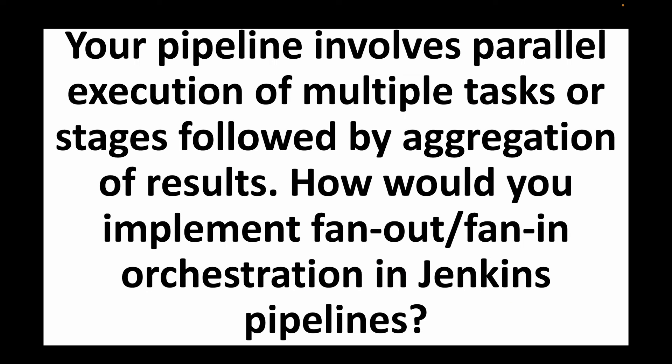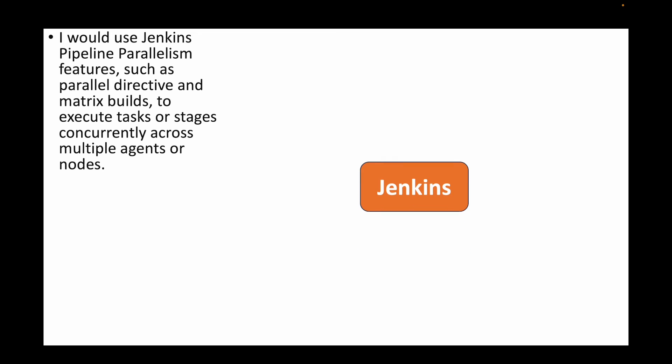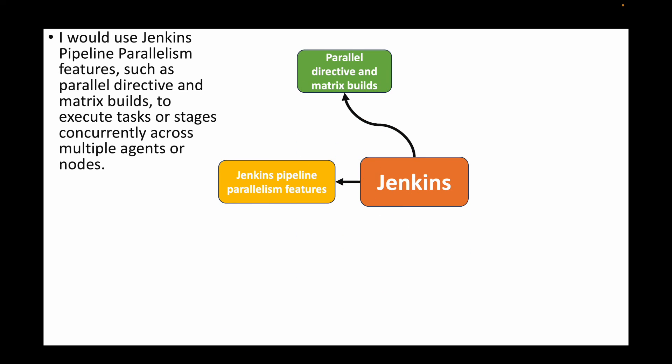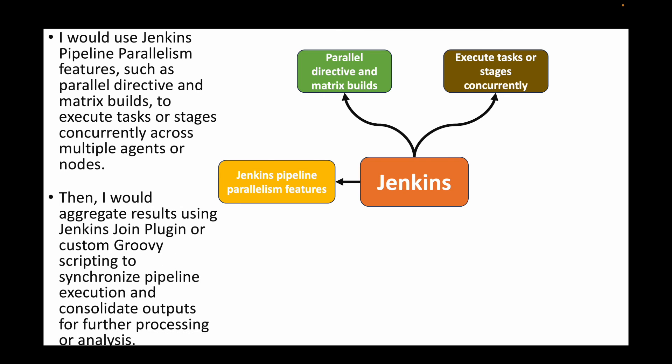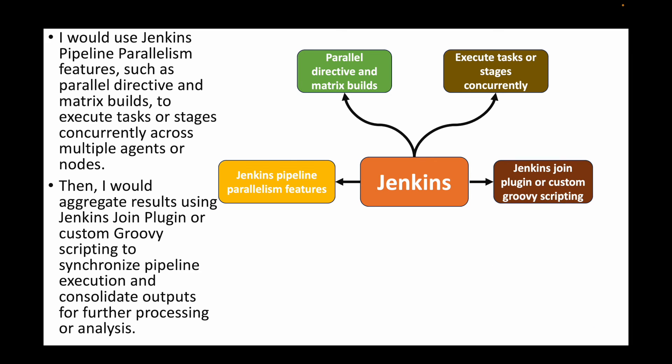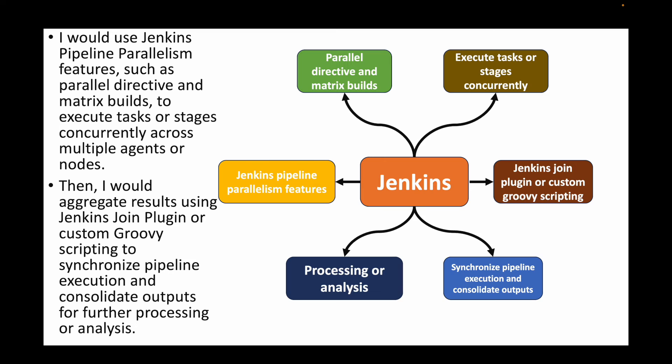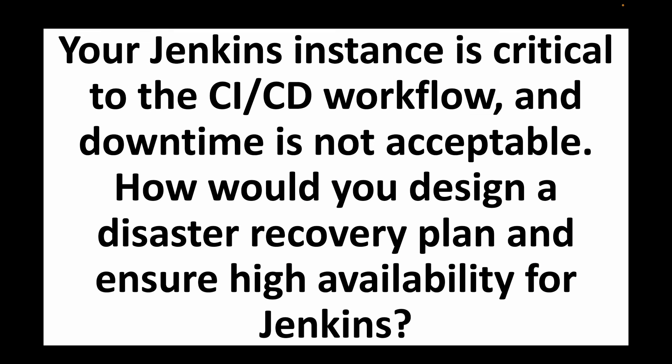The next question: your pipeline involves parallel execution of multiple tasks or stages followed by aggregation of results — how would you implement fan-out/fan-in orchestration in Jenkins? Use Jenkins pipeline parallelism features such as the parallel directive and matrix builds to execute tasks or stages concurrently across multiple agents or nodes. Then aggregate results using the Jenkins join plugin or a custom Groovy script to synchronize pipeline execution and consolidate outputs for further processing or analysis.